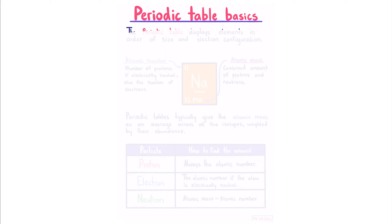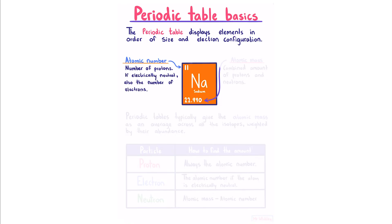Periodic Table Basics: The periodic table displays elements in order of size and electron configuration. From our element symbol, we have our atomic number, which is the number of protons, and if the atom is electrically neutral, it is also the number of electrons. And our atomic mass is the combined amount of protons and neutrons. You may ask, why is this a decimal? This is because periodic tables typically give the atomic mass as an average across all the isotopes, weighted by their abundance.